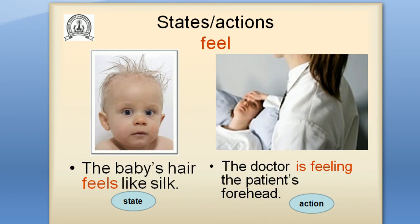Verb: feel. 'The baby's hair feels like silk' — I describe the feeling, so it's a state verb. 'The doctor is feeling the patient's forehead' — the doctor is touching the patient's head to find out about something, so it's an action verb. In example 1 I describe the feeling of my touch to the baby's hair — it's a state. In example 2, feel means touch, to find out about something — it's an action verb.